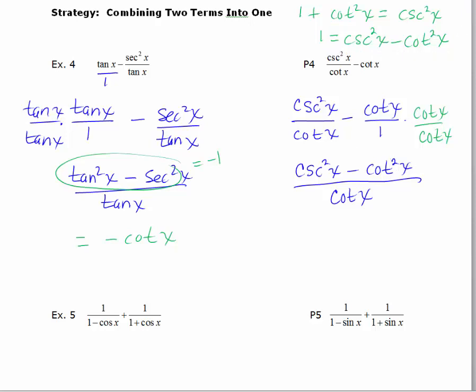So I can replace this numerator with a positive 1. Now I've got 1 in the numerator and cotangent x in the denominator. So this is just 1 over the cotangent which is tangent x.